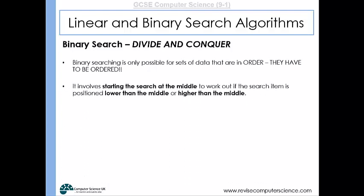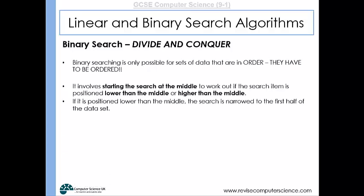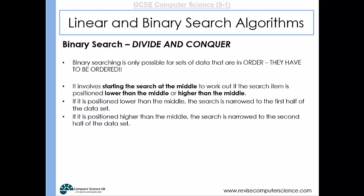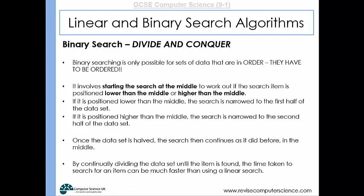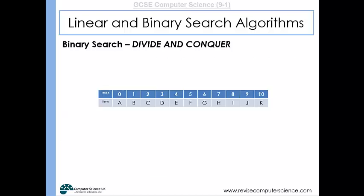Binary search involves starting at the middle of the array and determining whether the search item is lower or higher than the middle value. If lower, the search narrows to the first half; if higher, to the second half. By doing this on ordered data we quickly remove half the data to search, applying divide and conquer. For large data sets this is a very efficient searching algorithm, much faster than a linear search.